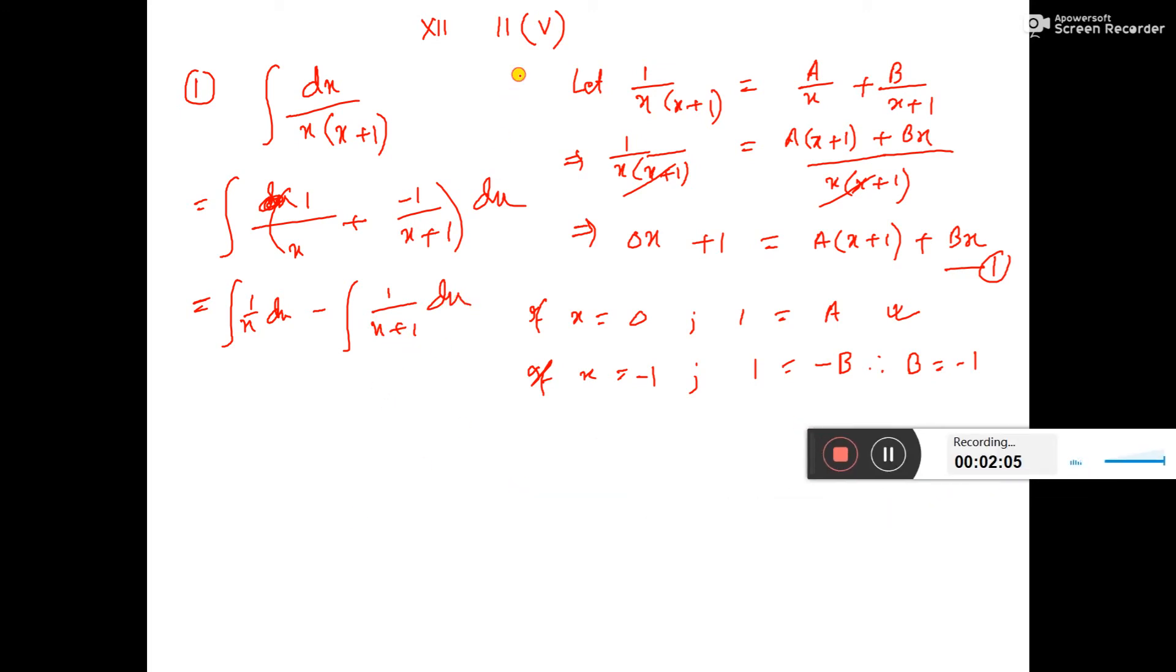Consider x plus 1 equal to z, then dx equals dz. The integral becomes 1 by x dx minus 1 by z dz.